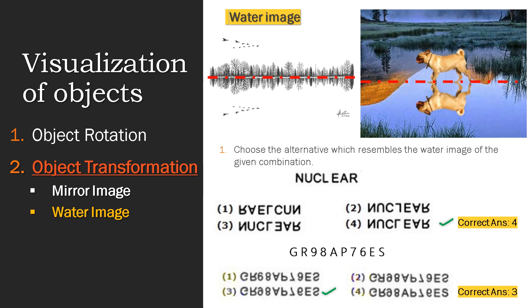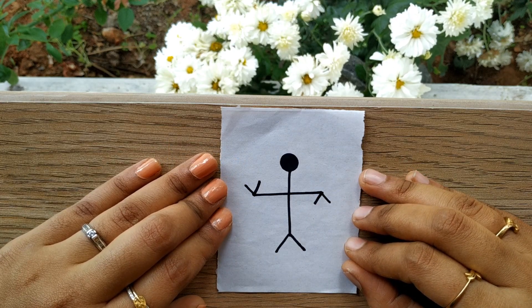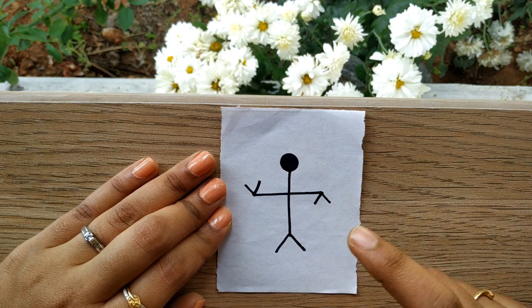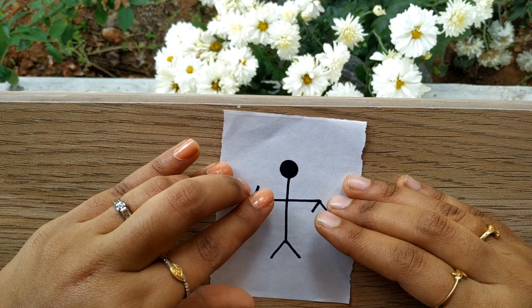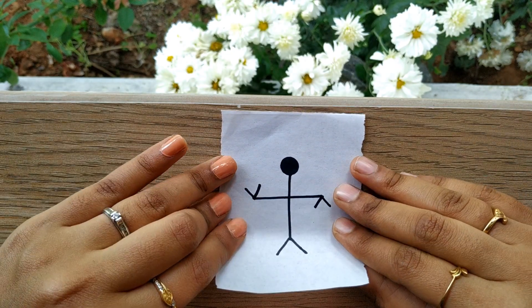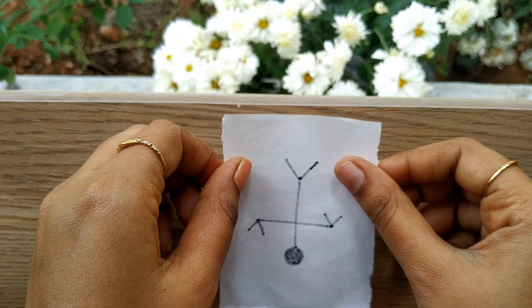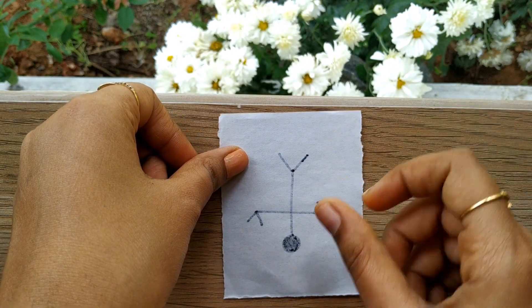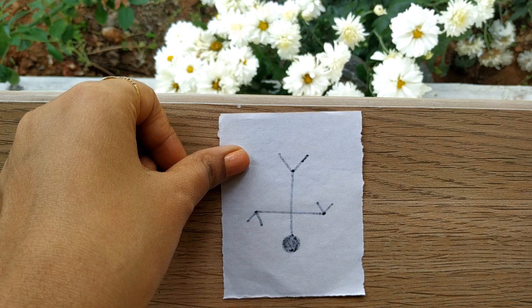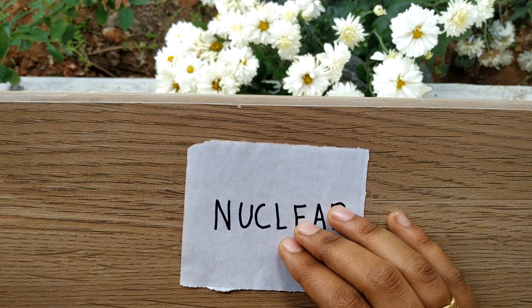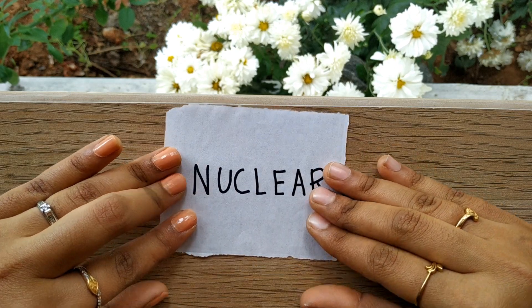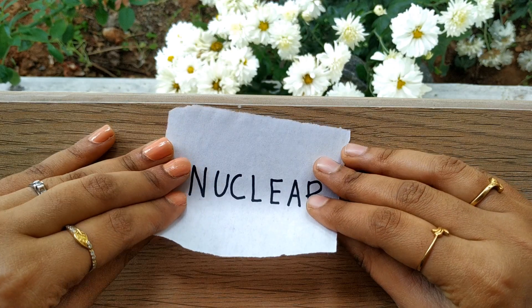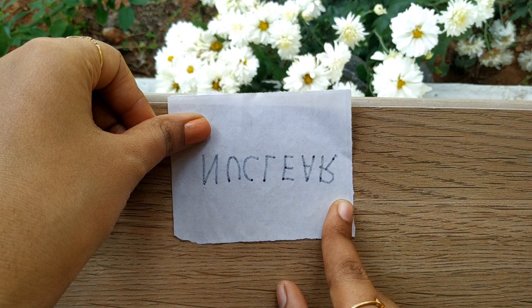There is a trick for water image as well. Keep three fingers on top of the paper and your thumb at the back of the paper, then twist the paper so your thumb comes on top. Now you can see the water image of that particular figure. Let's try with a word — same trick: three fingers on top and thumb at the back. Twist it — and this is the water image of that word.